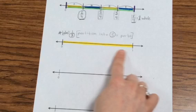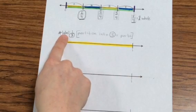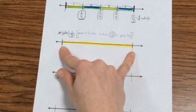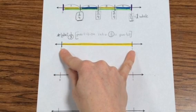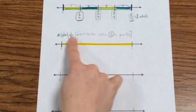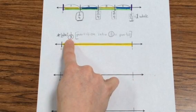Now the second number line, I want one-third to be labeled on the number line. The first step is to partition or divide the number line into three equal parts, the same as the denominator. The denominator tells us the total number of equal parts in a whole.